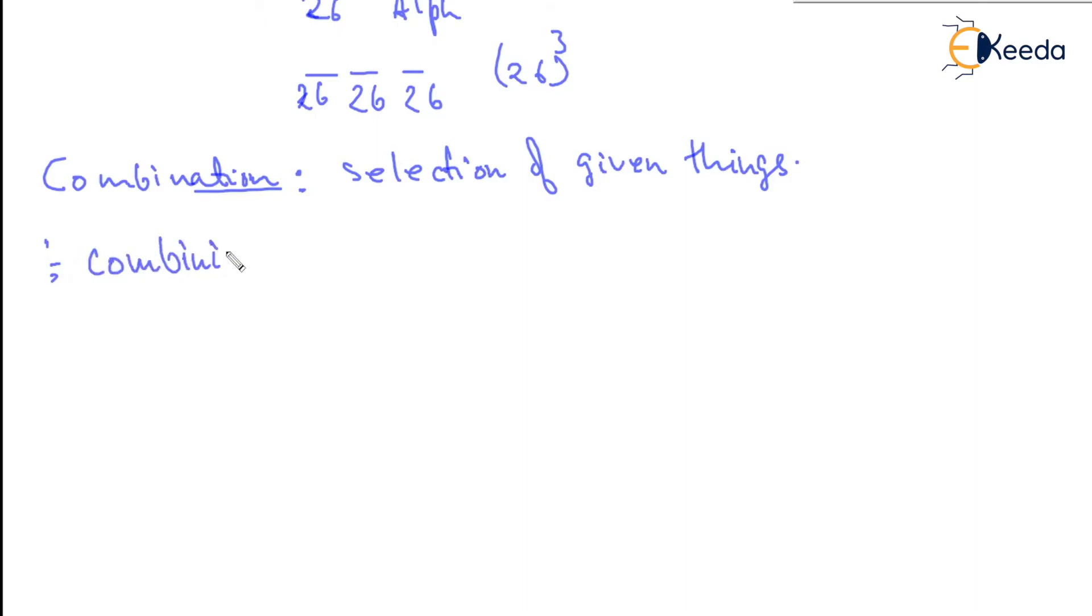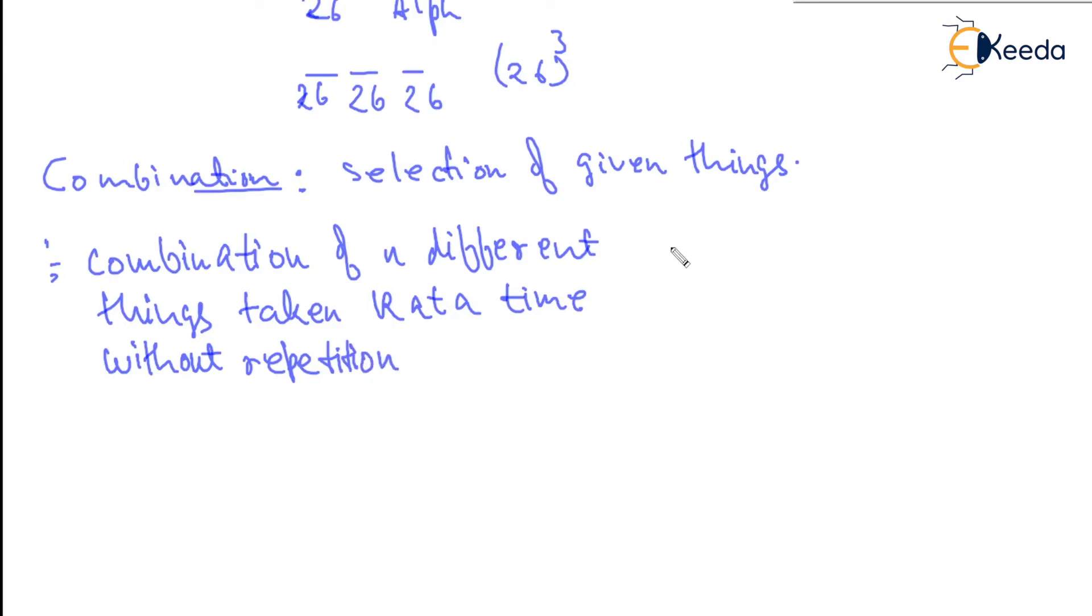Combination of n different things taken k at a time without repetition will be simply nCk, which is factorial n by factorial k and factorial n minus k.